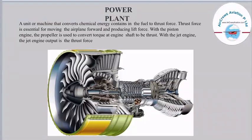The power plant is a unit or machine that converts chemical energy contained in fuel into thrust force. Thrust is essential for moving the airplane forward and producing lift. With a piston engine, a propeller converts torque at the engine shaft to thrust. With a jet engine, the output is directly thrust force. Essentially, the power plant is the engine area of the aircraft.